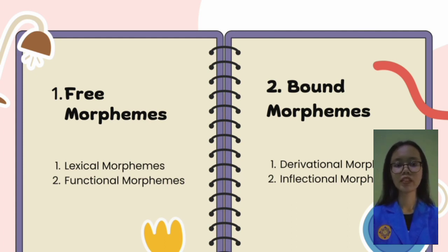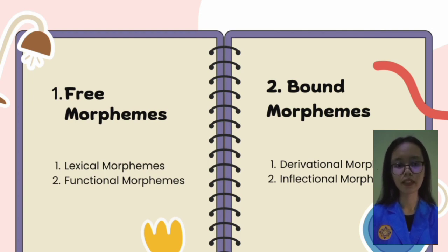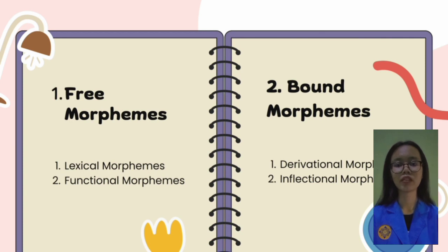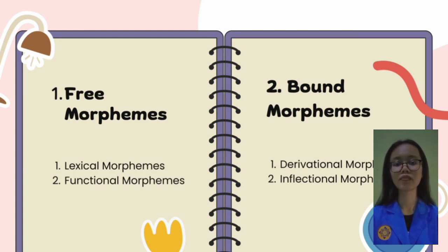Free morphemes are morphemes that can stand by themselves. Free morphemes have several basic types, namely verb, noun, adjective, preposition, and others. For example, 'study' is a verb, 'man' is a noun, 'kind' is an adjective, and 'on' is a preposition. Free morphemes are divided into two types: the first is lexical and the second is functional morpheme.